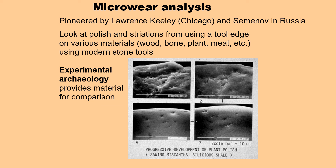Microware analysis was pioneered by Lawrence Keeley and Semenov. In microware analysis, you look at the striations and the polish that result from using a tool edge on various materials such as wood, bone, plant, and meat. You do this using modern stone tools with fresh, sharp edges — experimental archaeology, then, provides the material for comparison.